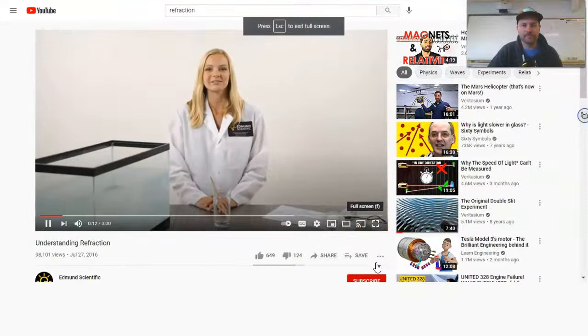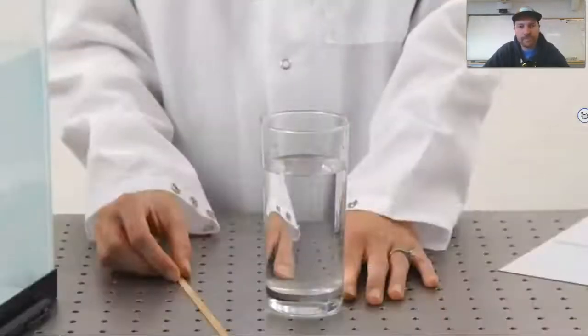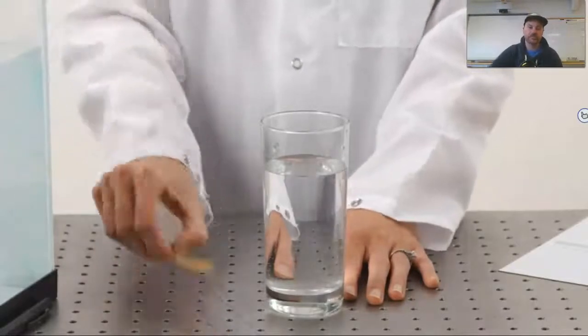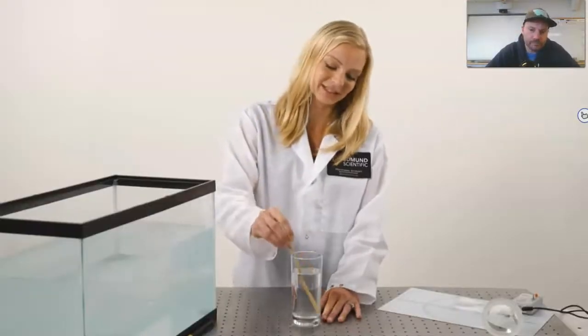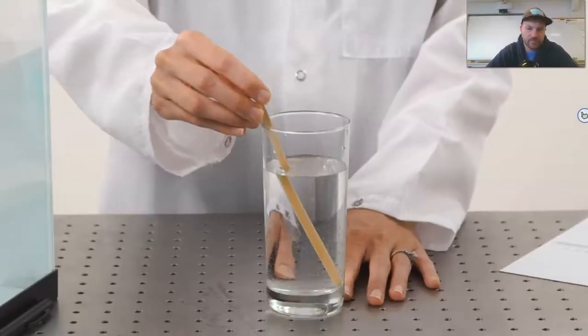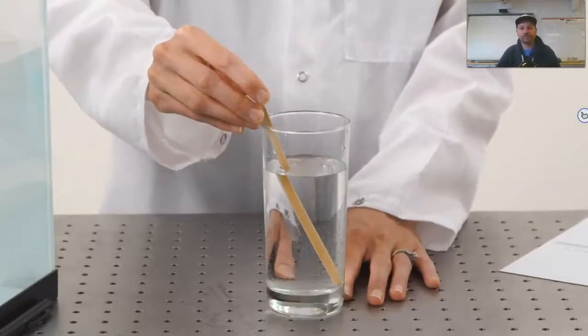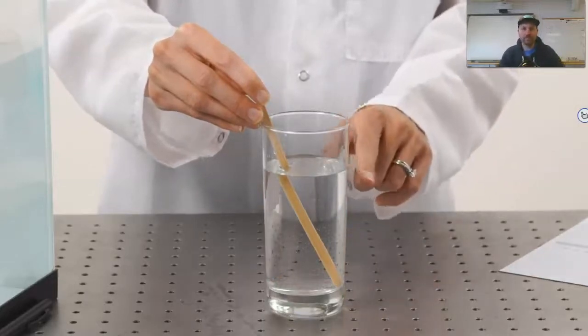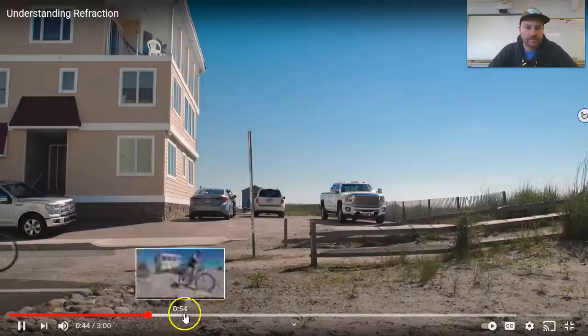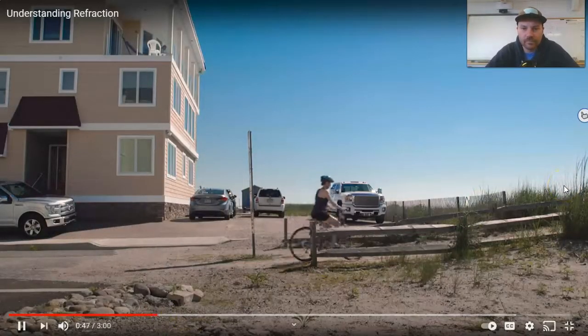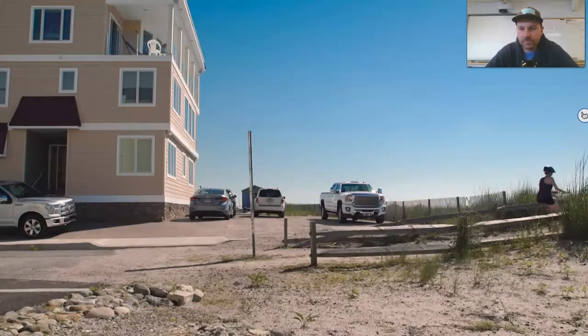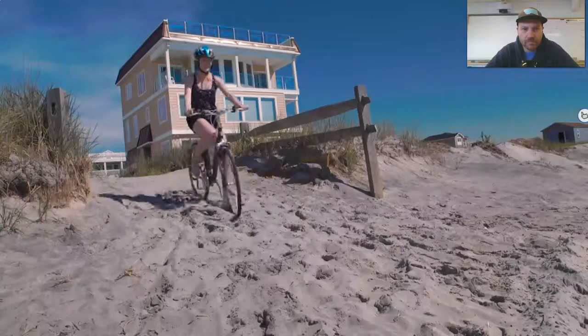Today we're going to talk about refraction of light. Refraction is when light bends when it travels from one medium to another. A medium is any substance. Here I have a glass of water and a popsicle stick. I'm going to insert the popsicle stick into the glass of water. As you can see, it appears that the popsicle stick bends at the barrier between the air and the water. Refraction is caused by a change in the speed of a wave of light when it moves from one medium to another.